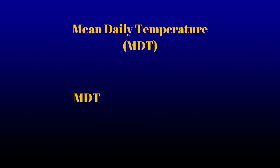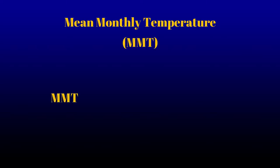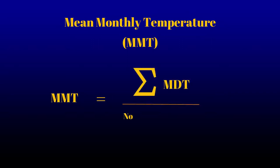When recording temperatures, it is useful to calculate the mean daily temperature, which is adding the maximum temperature and the minimum temperature and dividing by two. You can also calculate the mean monthly temperature, in which we sum all the mean daily temperatures and divide by the number of days in the month.